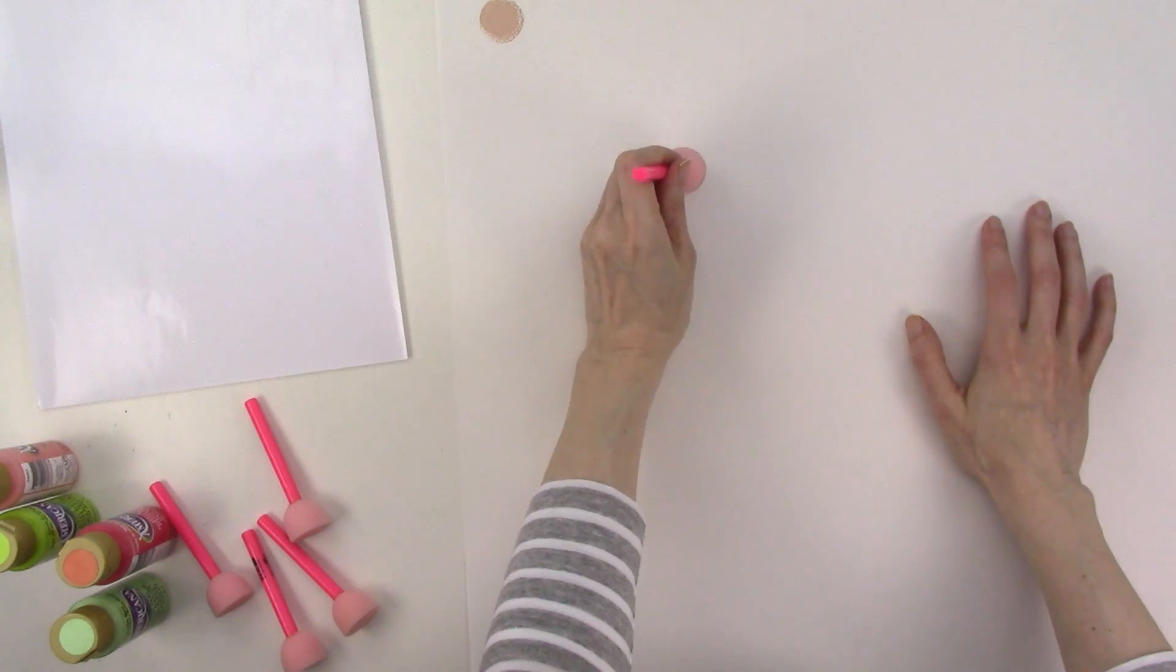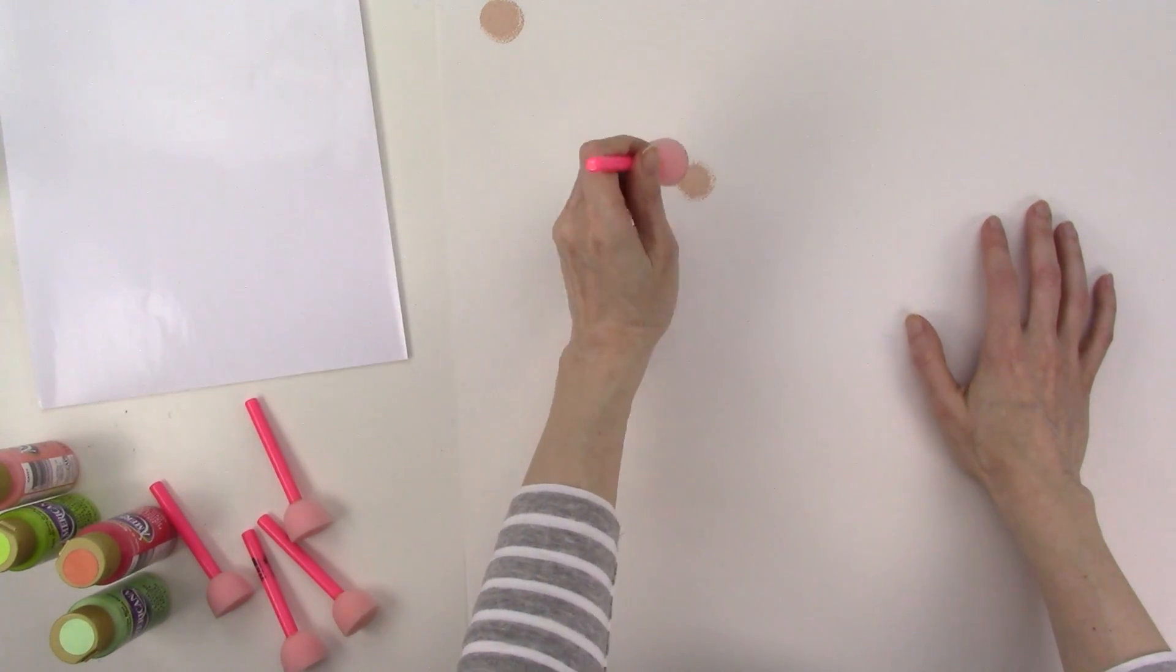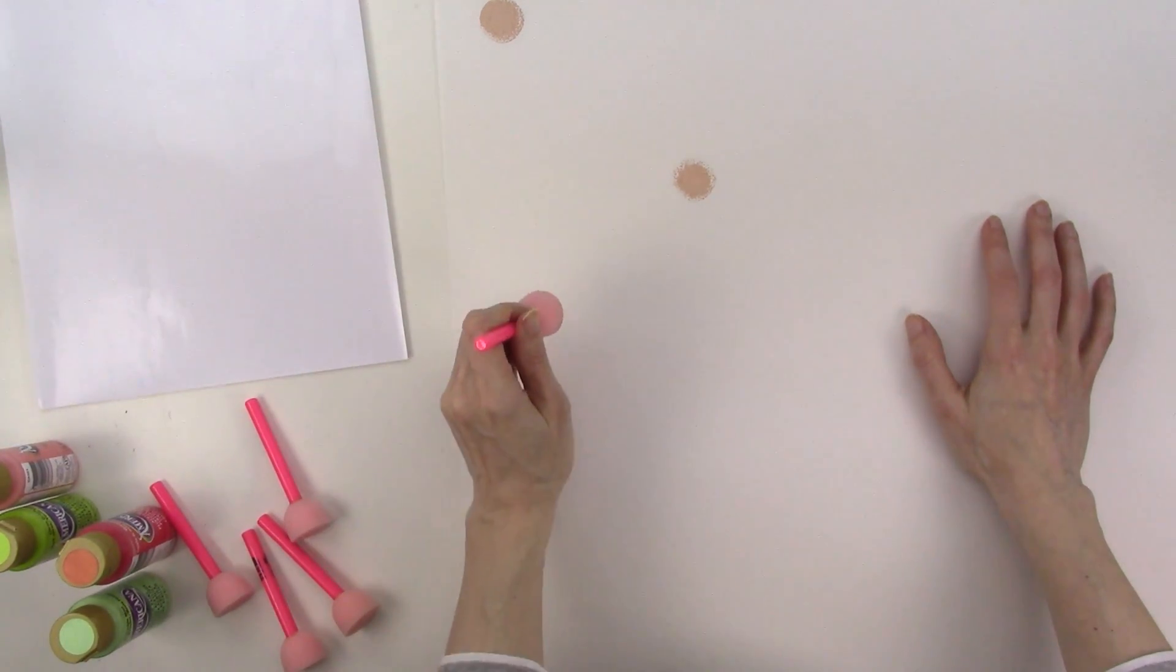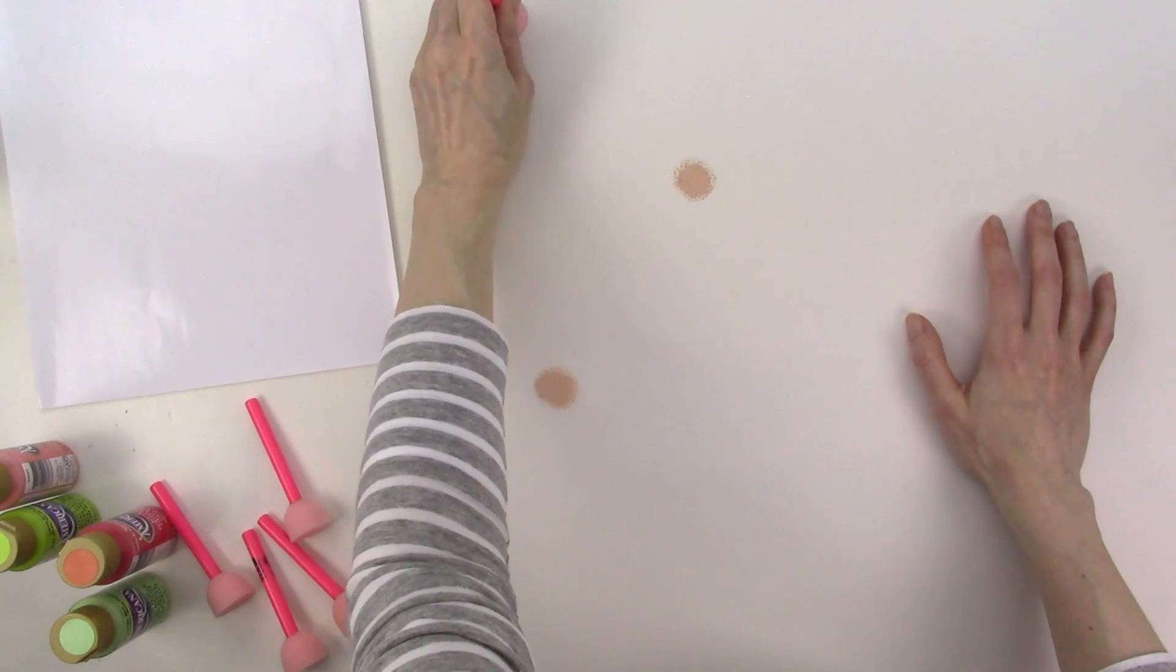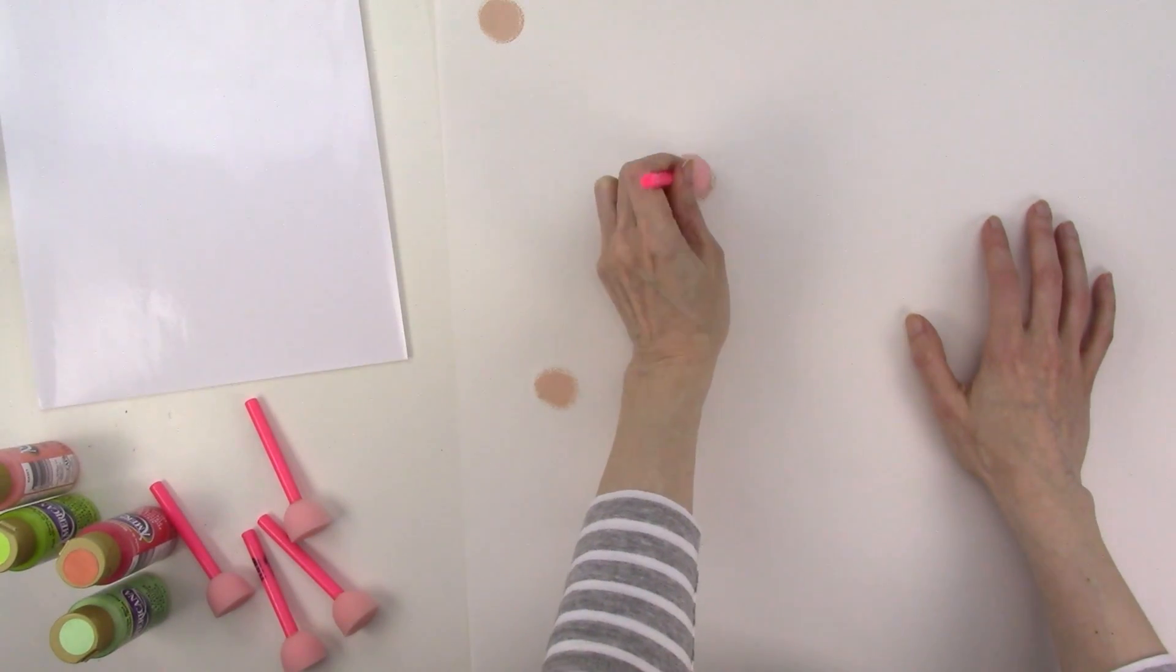After that, I'll press the pouncer onto the paper to make a dot. If you want heavier coverage, then you can press the pouncer over the same area more than once to add more paint. The less paint you use, the spongier the dots look around the edges. And I really like that sponged on look.